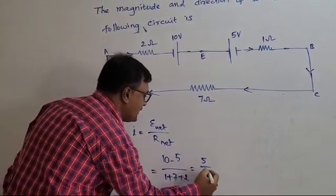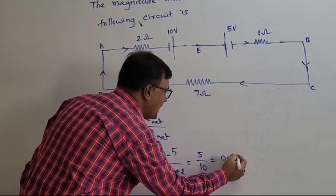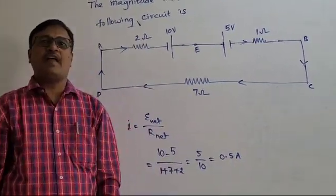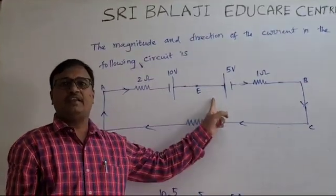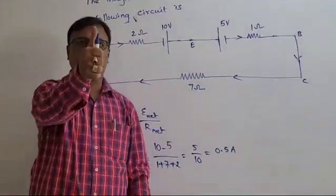This is equal to 5 divided by 10, which is equal to 0.5 ampere. 0.5 ampere current flows from A to B through E.